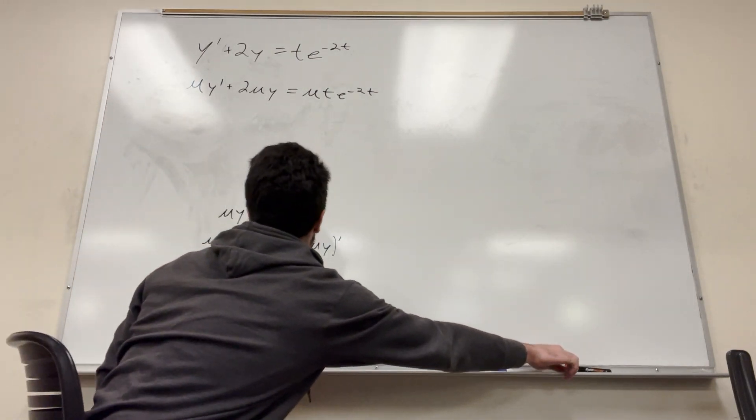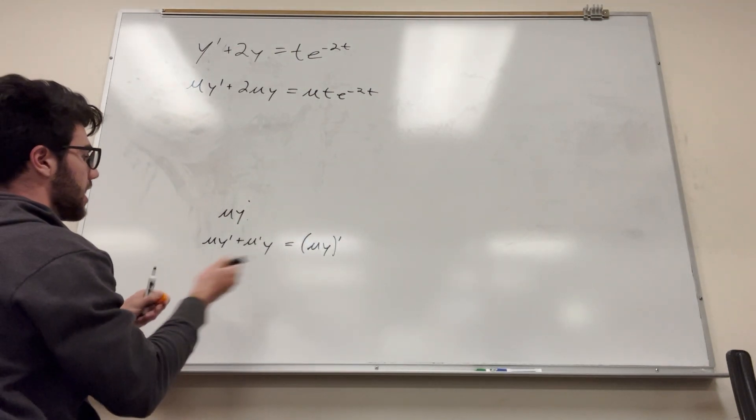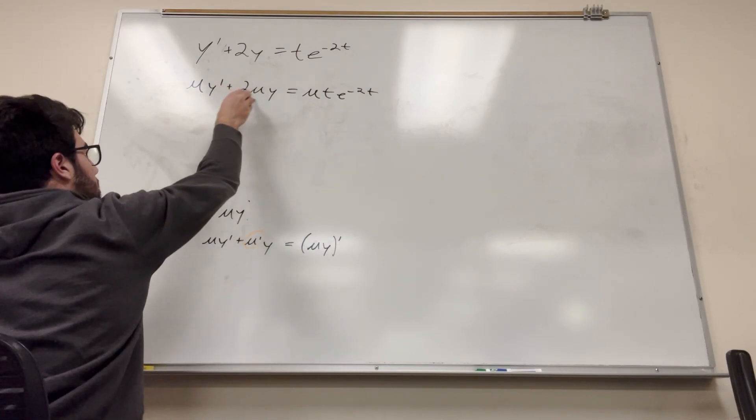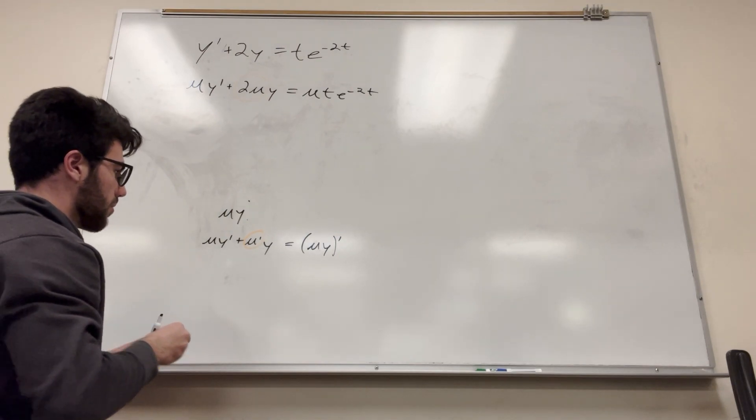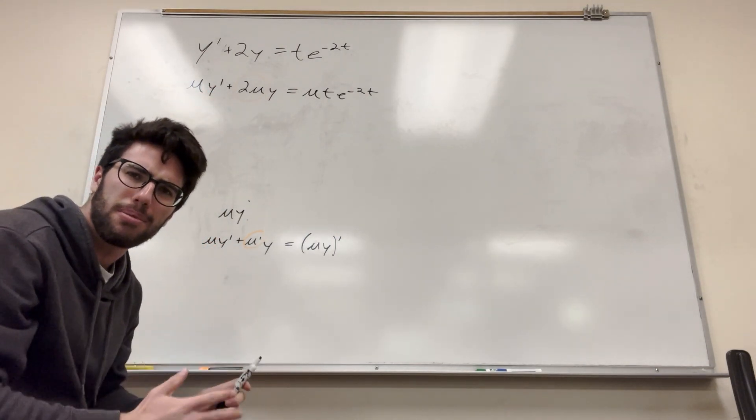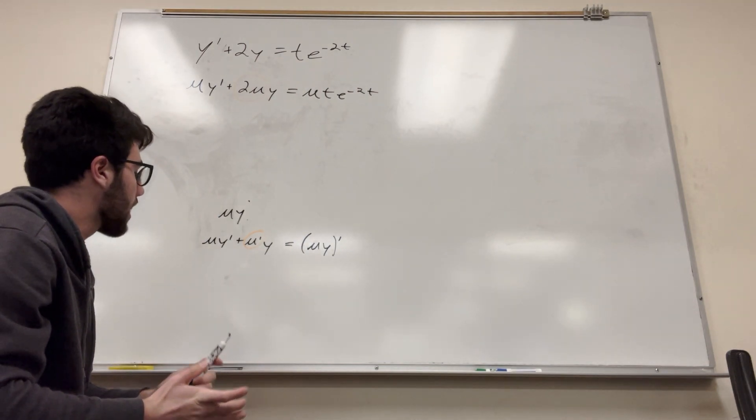Now, what else we got? Well, we have this y here, and then we have this y here, but we have mu prime and then 2 mu. So what we're trying to do is find out this 2 mu is equal to mu prime. We're trying to find a mu that makes that work.